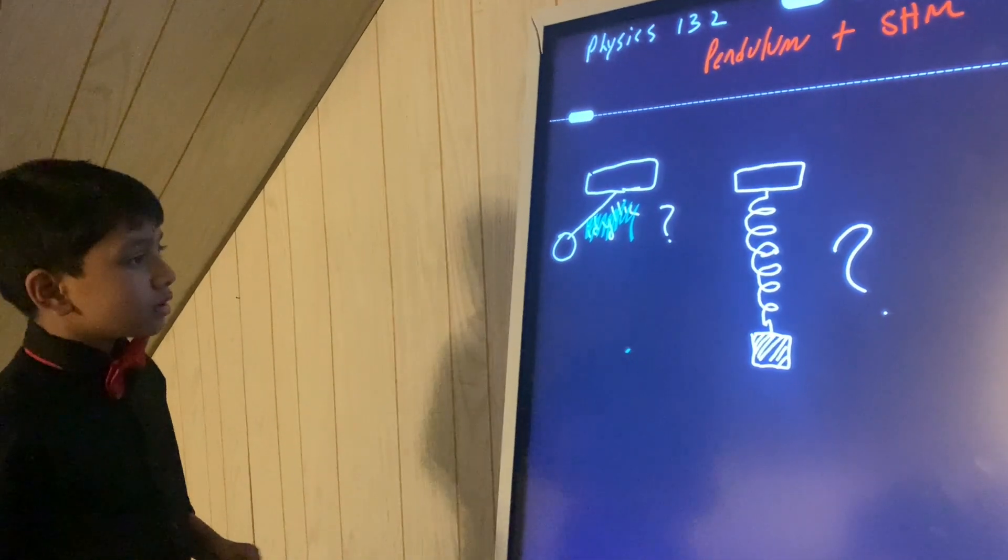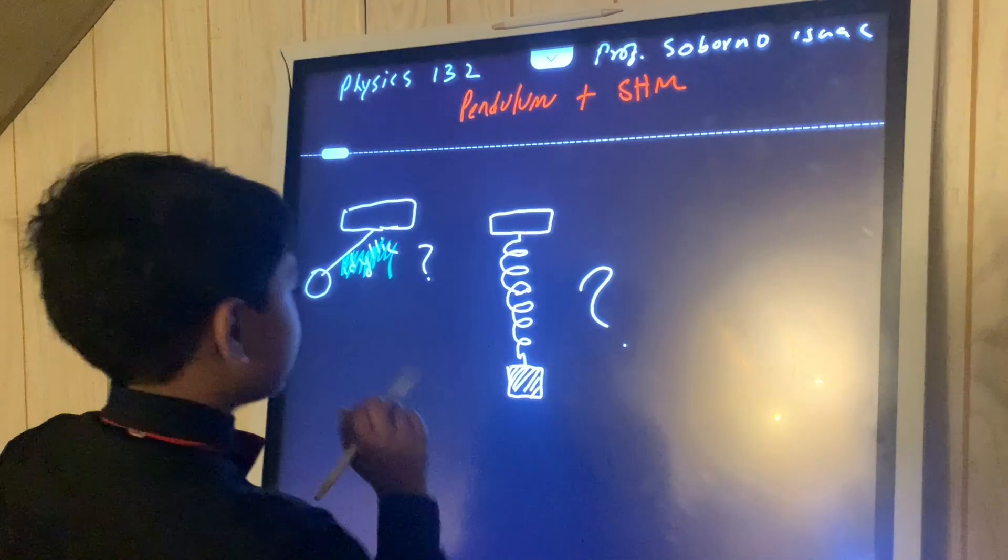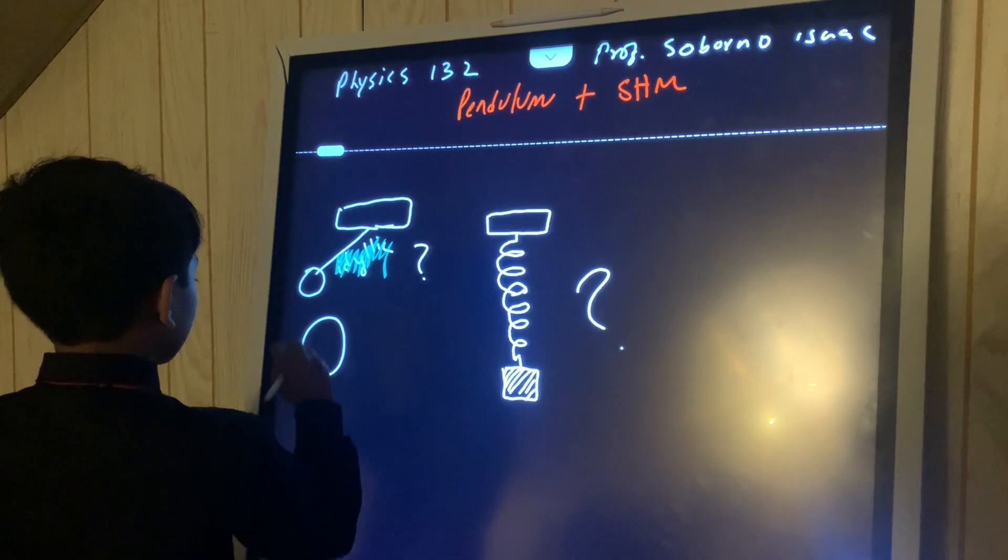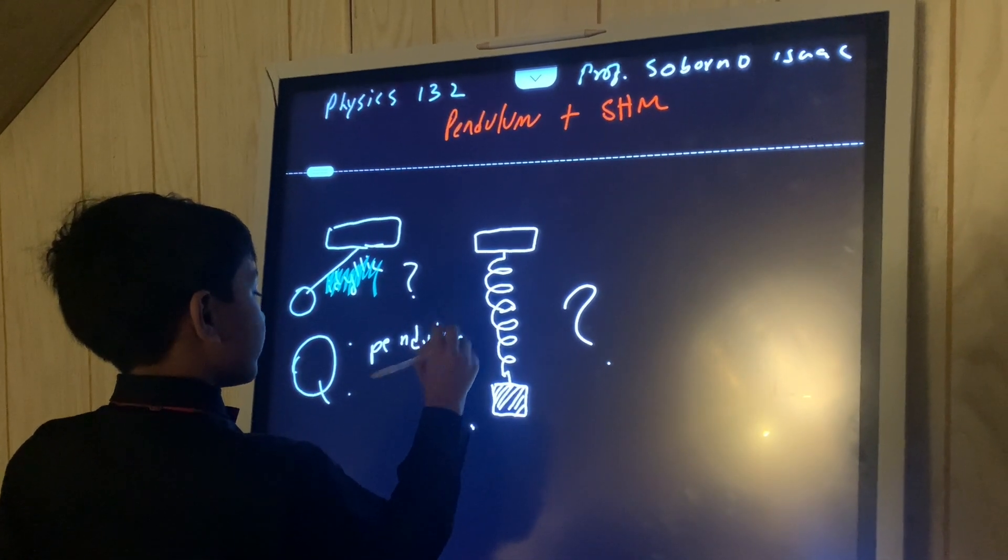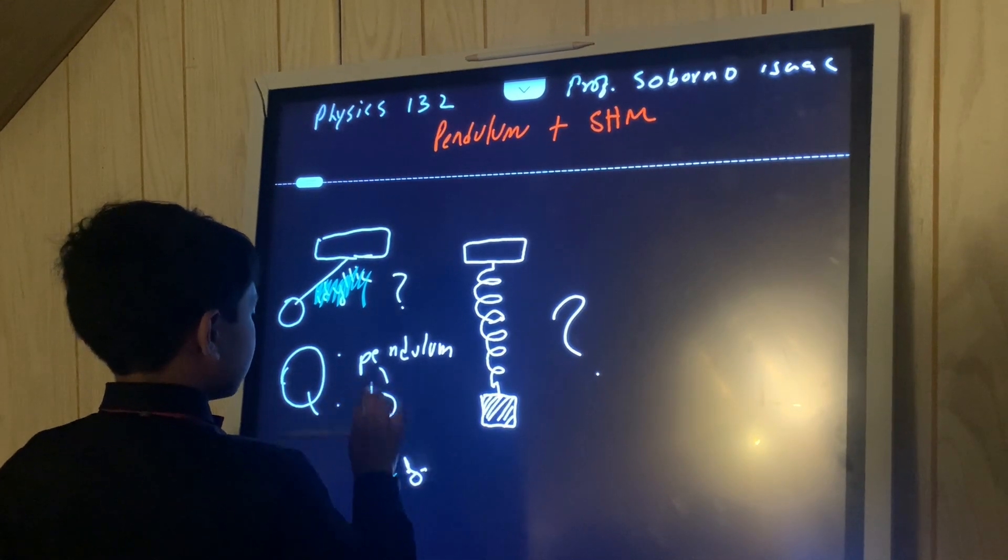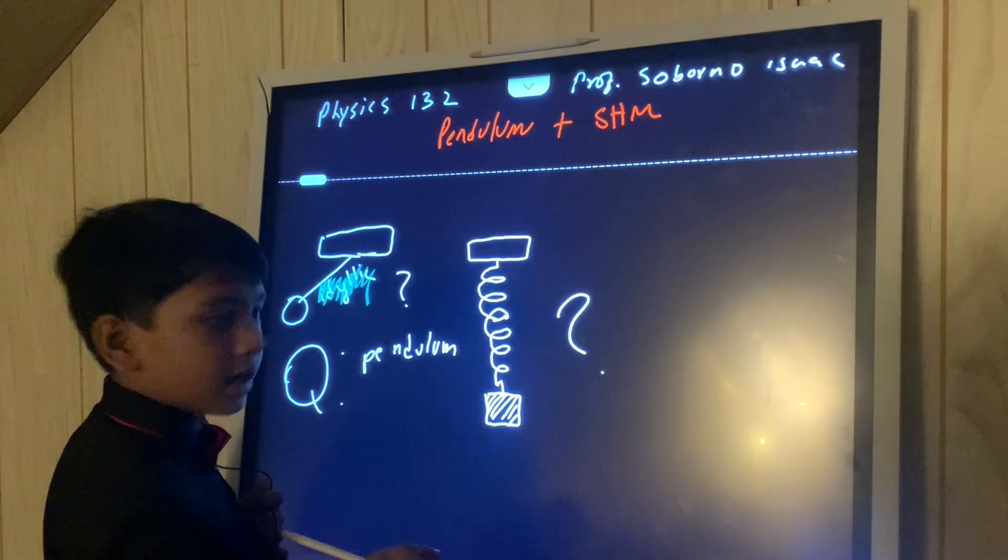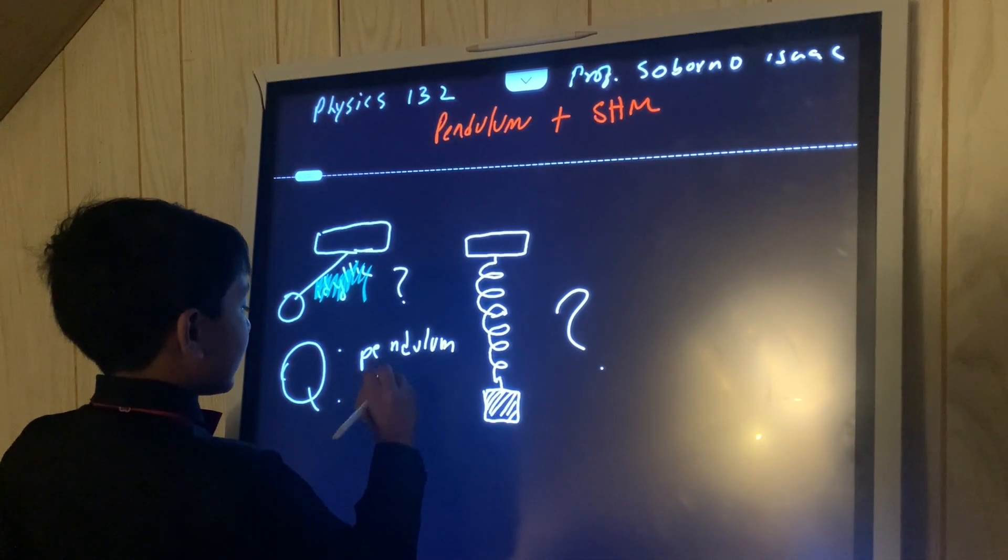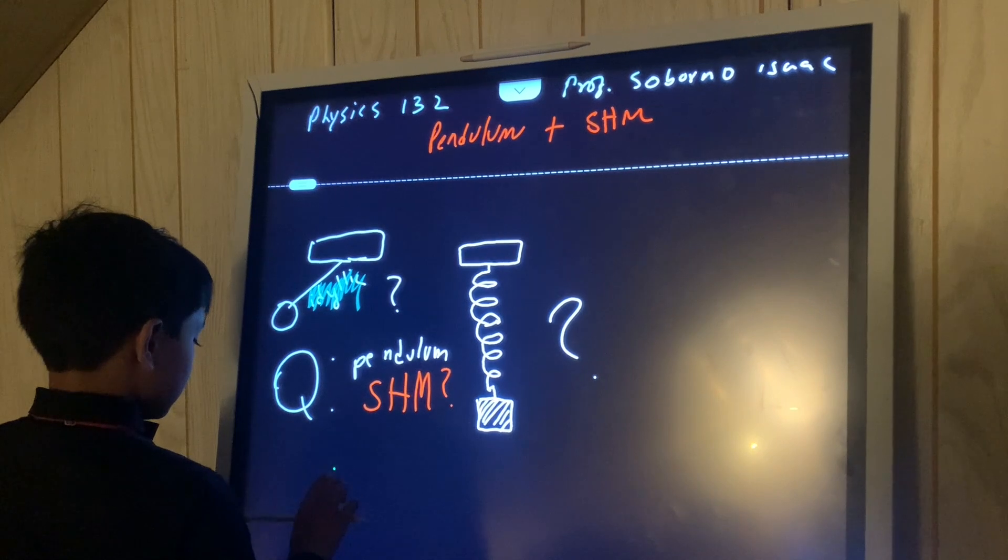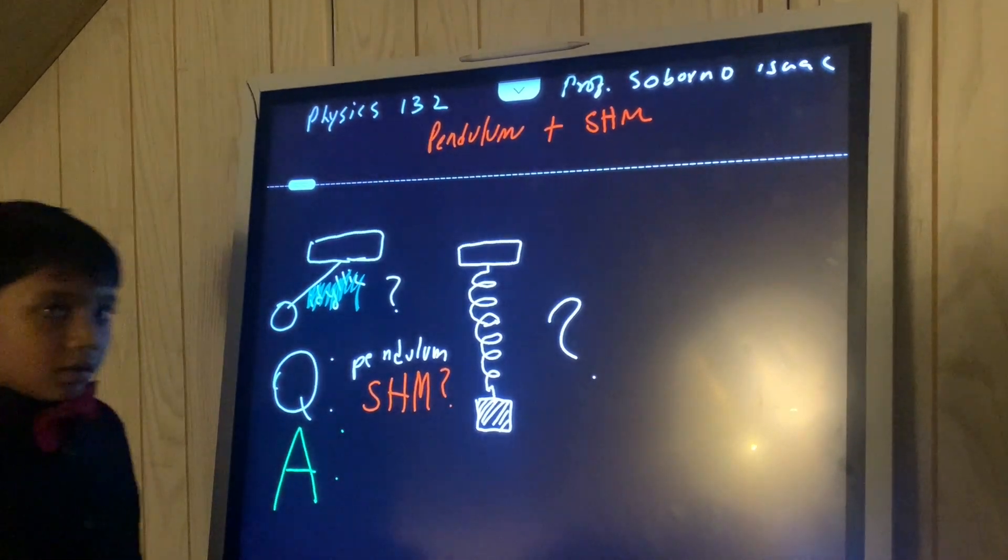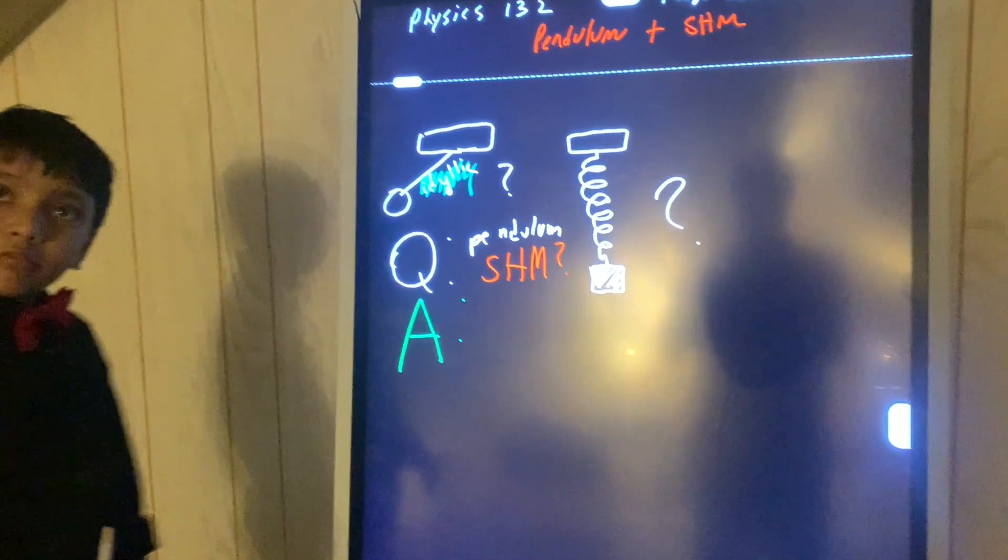So now that we know that, we are going to ask the question. Does a pendulum fall under a category of a perpetual machine that follows SHM? We're going to be anticipating this. And at the end of the lecture, we're going to come back to this screen and see what we predicted was really true.